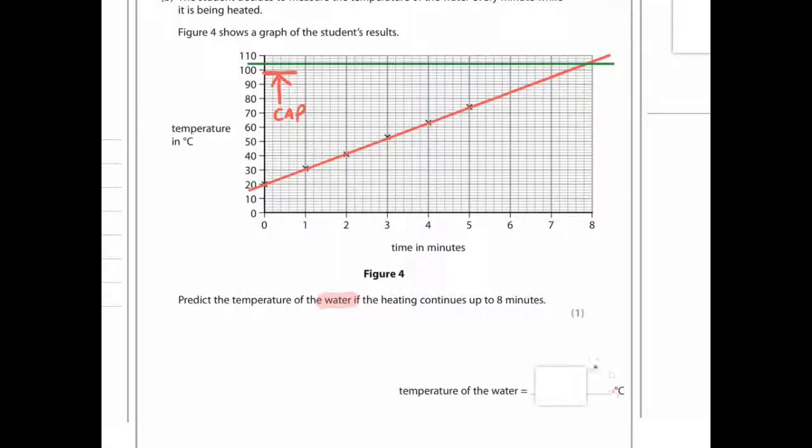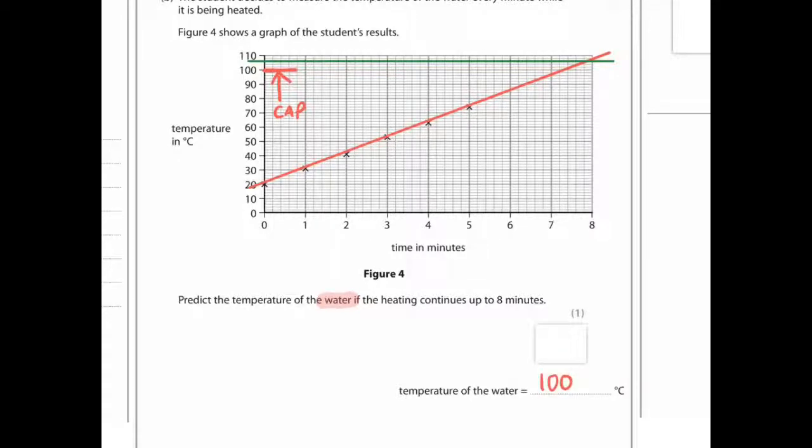However, before you write 106 there, you have to bear in mind you're dealing with water. And once water reaches 100 degrees Celsius, assuming stuff isn't dissolved in it, assuming pressure's normal, it doesn't increase beyond 100 degrees. So it caps at 100 degrees. So the temperature of water will not be 106, it'll have to be 100 degrees Celsius. Bit of a trick question.